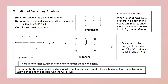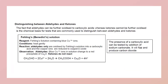Oxidation of a primary alcohol: partial oxidation gives an aldehyde, and complete oxidation of a primary alcohol produces a carboxylic acid. Secondary alcohols are oxidized to ketones, and tertiary alcohols cannot be oxidized. To distinguish between an aldehyde and a ketone, we can use Fehling's or Benedict's solution, because it contains copper(II) ions and is originally blue in colour.